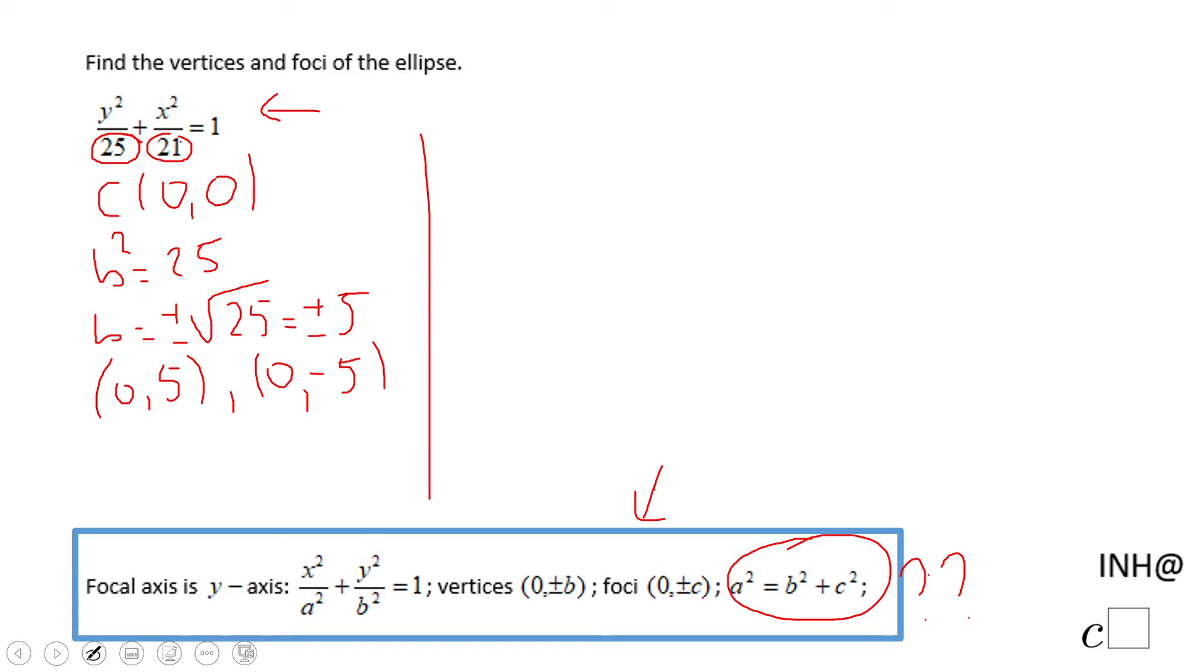And you notice these two points are on the y axis. Now if you use this equation here as it is you're going to get a c squared of negative 4. So you really kind of need to be careful with this form.